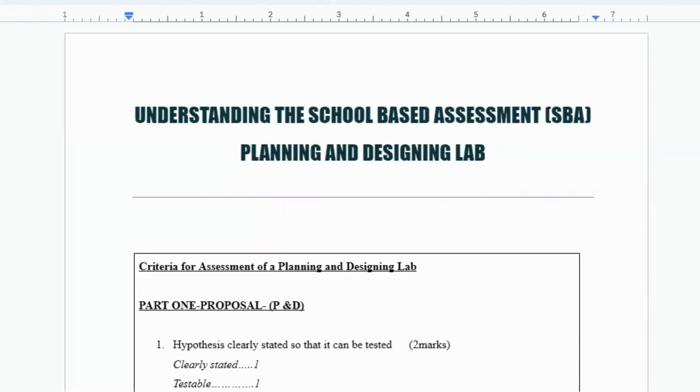You will hear the planning and designing lab being referred to as something else, and that's the proposal. A planning and designing lab is called a proposal if you've selected it to then carry out. So you would have planned a lab, designed it, and then you would say, OK, I really want to test this one. And so when you do carry it out, it is then referred to as the implementation. Let's go back to the beginning and talk about what the planning and designing lab really is, how you get your marks, how it is supposed to be laid out.